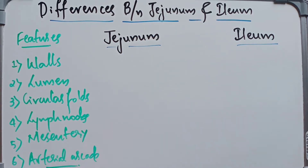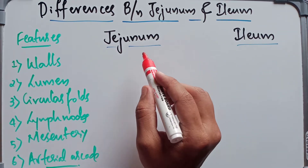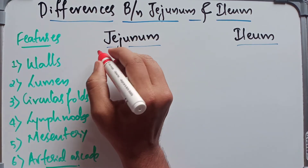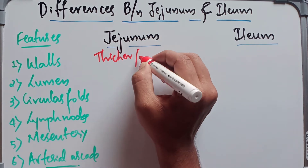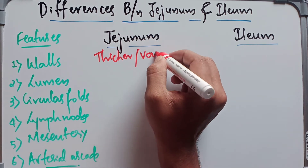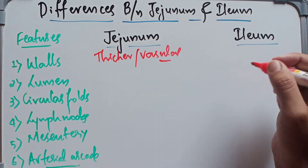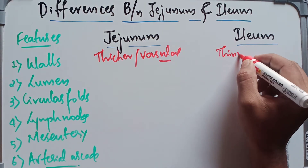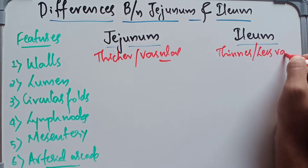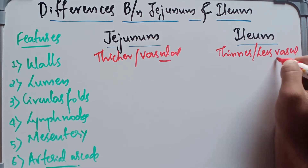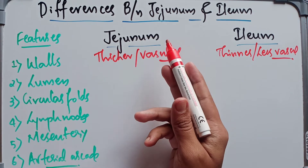Coming to the walls: in the jejunum we have thicker and more vascular walls. In the ileum, the walls are thinner and less vascular in nature.